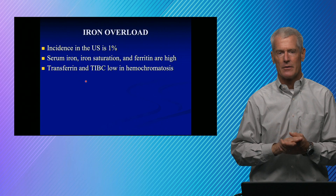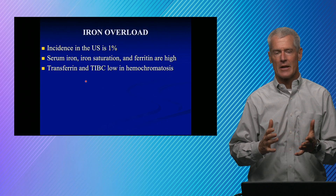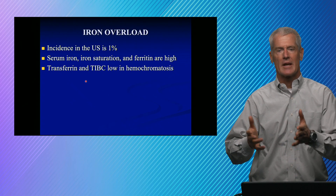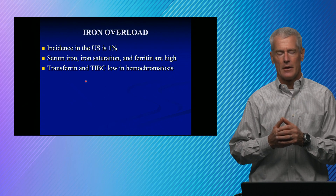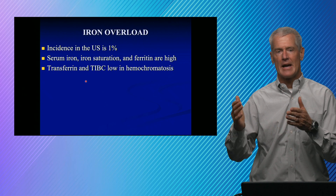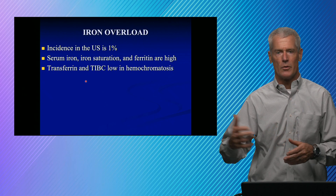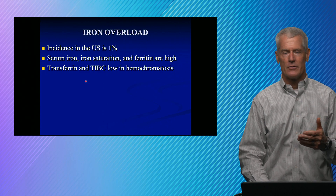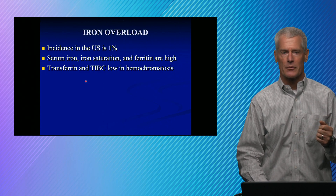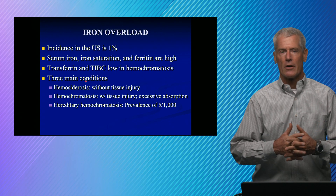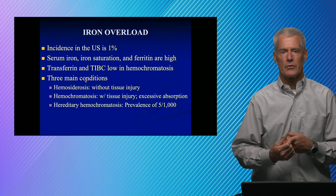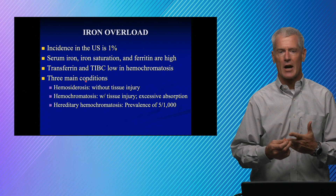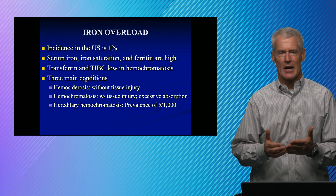I like to think of it as: if you're iron deficient, your body up-regulates transferrin so it can capture any iron that's around. If you're overloaded, your body down-regulates transferrin so that you don't store too much iron. That's a fairly simplistic view, but it will help you interpret the labs correctly. In iron overload, there's either hemosiderosis — iron overload without tissue damage — or hemochromatosis, which is iron overload with tissue damage.